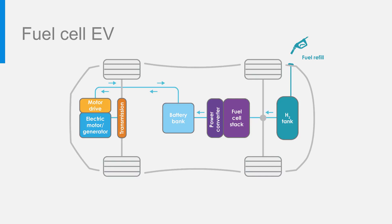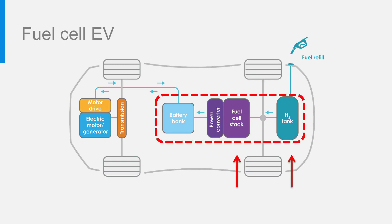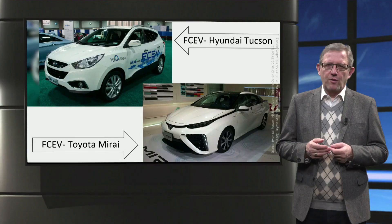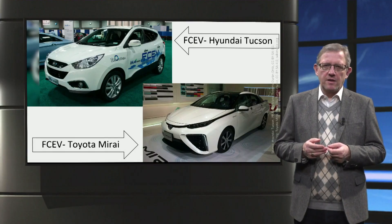Next, we look at a fuel cell electric vehicle. A fuel cell electric vehicle substitutes the larger battery of a battery electric vehicle for a fuel cell stack to generate electricity from hydrogen fuel. Unlike a battery, a fuel cell is not a storage device but a component that produces direct current from a chemical reaction. A small battery is still used as an energy buffer to power the electric motor using the motor drive. A fuel cell vehicle has the advantage of short refueling times and extended driving range when compared with a battery electric vehicle. Here are two examples of fuel cell electric vehicles: the Hyundai Tucson and the Toyota Mirai.